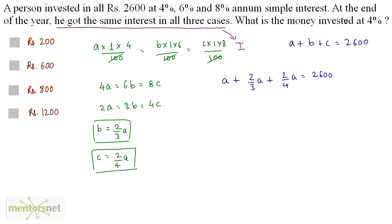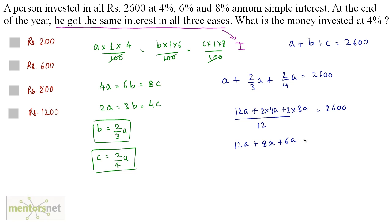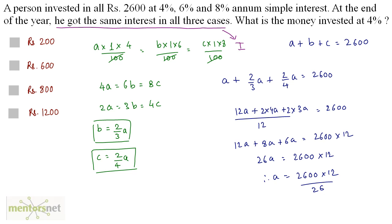A is the money invested at 4%, which is what we need to find. The LCM of 3 and 4 is 12, so we get 12A plus 8A plus 6A equals 2,600 times 12. That gives 26A equals 31,200. Therefore A equals 2,600 times 12 divided by 26, which simplifies to 100 times 12 equals Rs. 1,200. That is the amount invested at 4%. Option D is the correct answer.